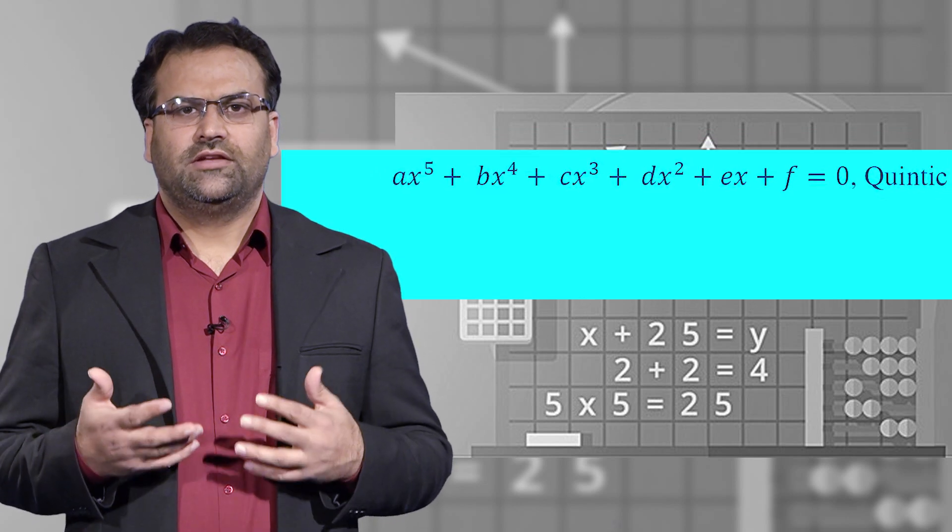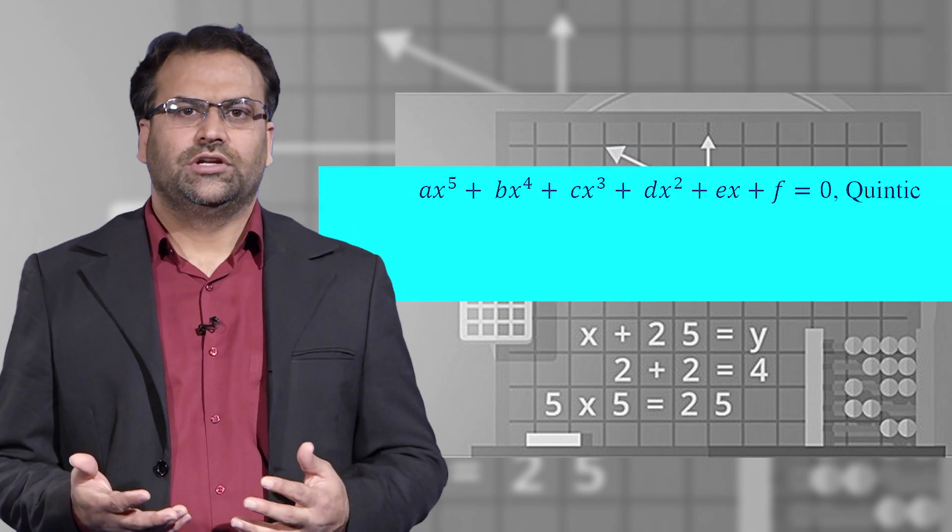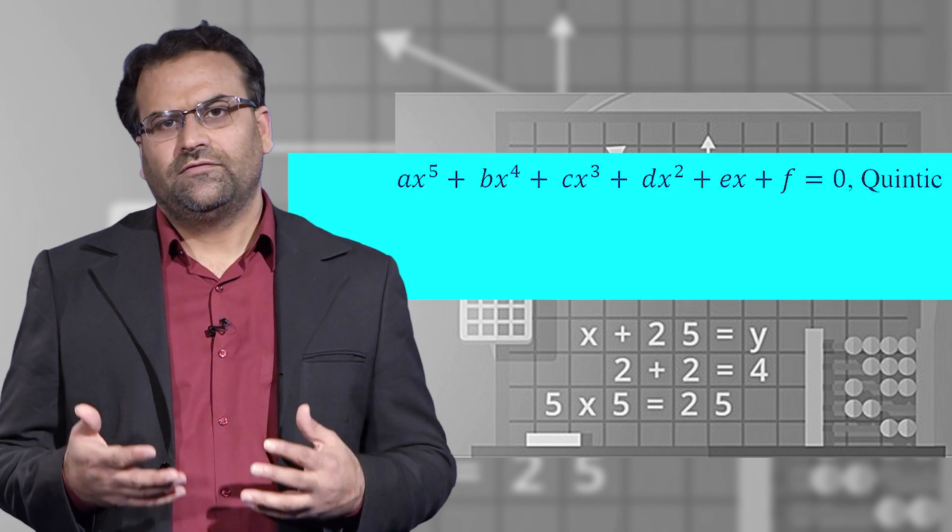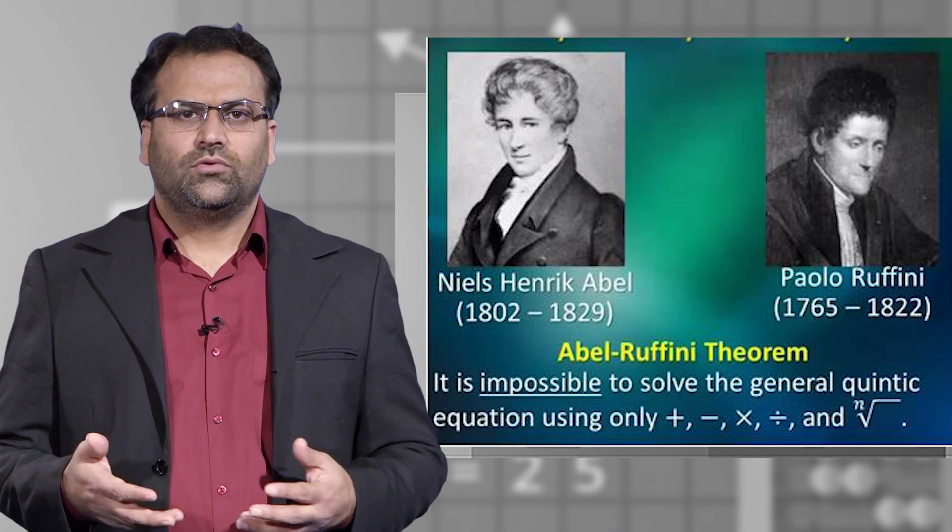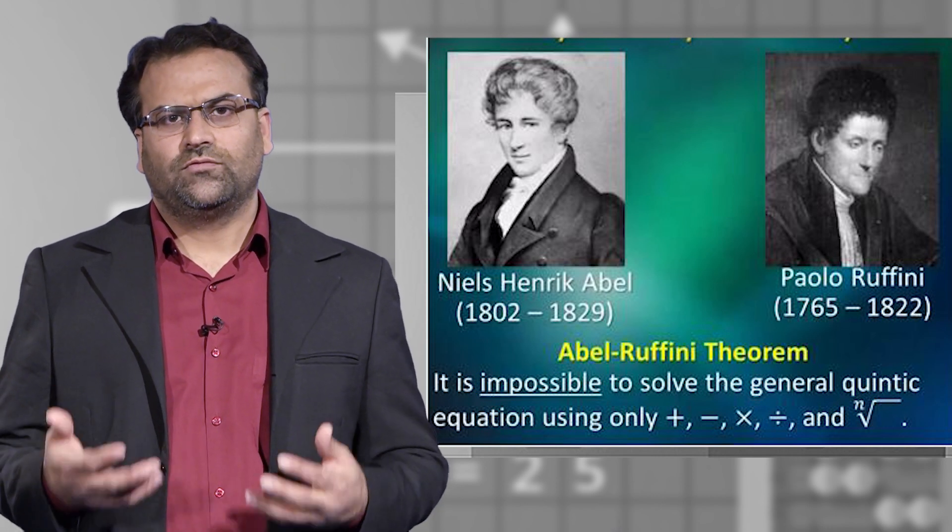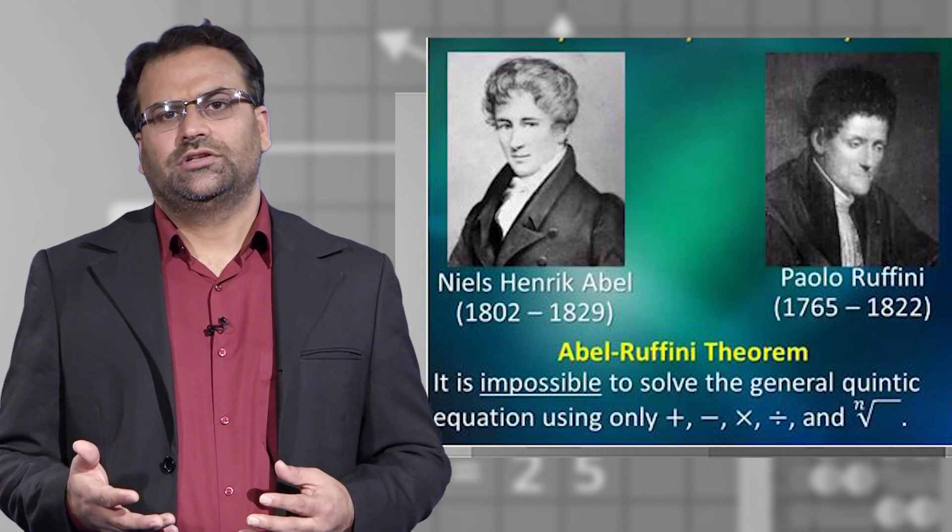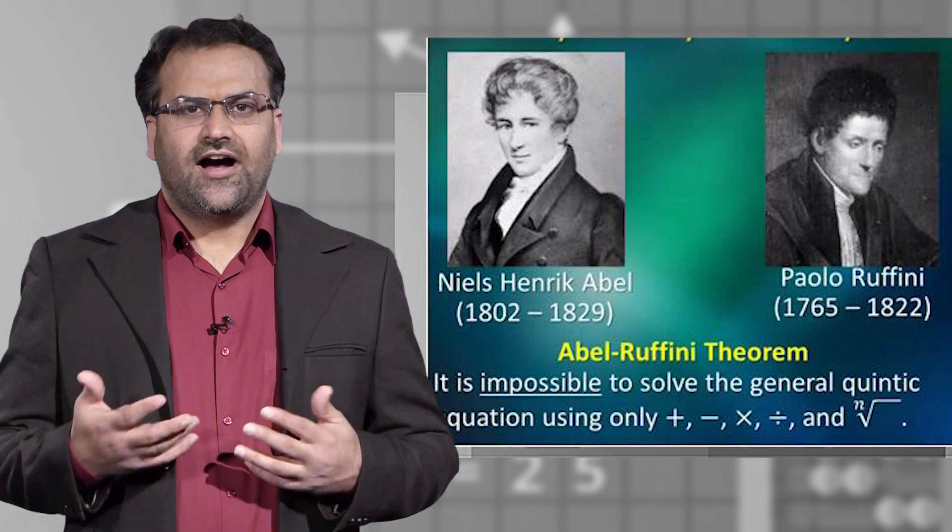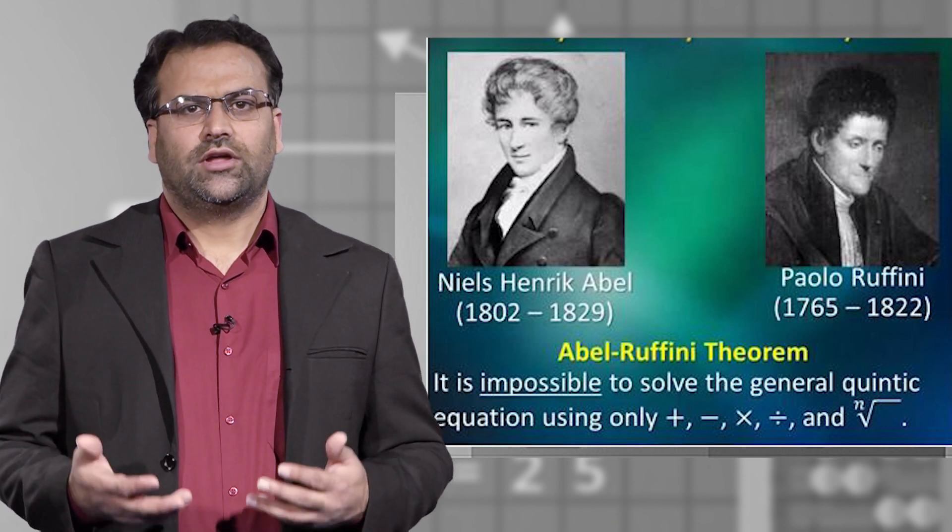But what about the formula for fifth degree equation or higher degree equations? In the beginning of 19th century, two mathematicians, Abel and Ruffini, proved that it is impossible to find a general formula for fifth degree equation or higher degree equation. Abel-Ruffini theorem was a major breakthrough in the story of algebra.